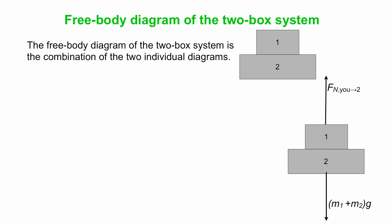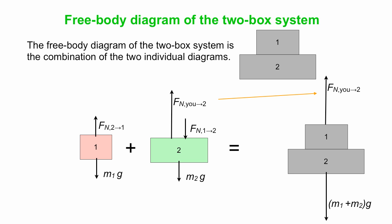And we also saw how that came from adding together the individual box free body diagrams. Okay, so put those two things together and you get this, there's the normal force applied by you on two, there's the combined gravitational forces, and we didn't need to include the two normal forces because they are equal and opposite by Newton's third law. They're internal forces in the system, they cancel out. You only have to include forces external to the system when you draw your free body diagram.